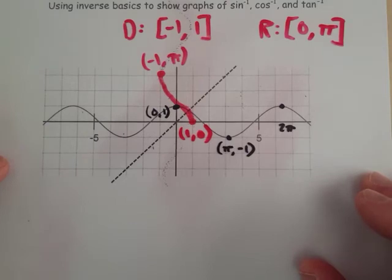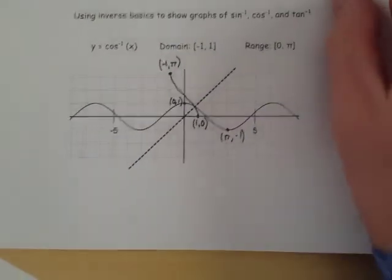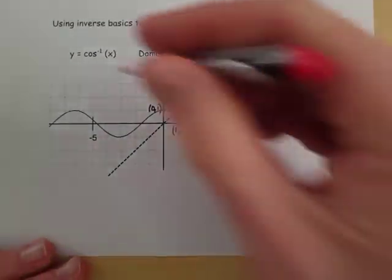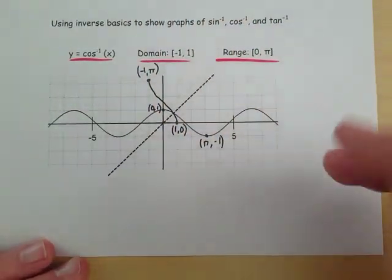And this is our cosine inverse. So I'll put it up here with a little bit neater look to it to finish off this one. We've got the cosine inverse with a domain and a range.